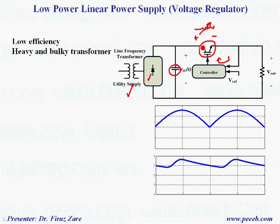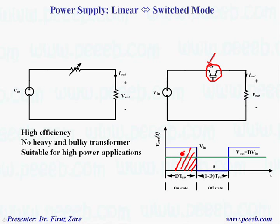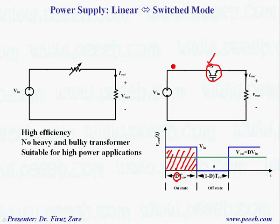So this sort of power supply is not a good one for high power applications because we have so much loss through this transistor. That's why we need to have another type of power supply. In switch mode power supply, we turn on and turn off the switch. So in this case, we chop the DC voltage based on the pulse pattern coming from a controller and then we try to change the DC voltage or change the average over one cycle. Basically, this is the method where we can control the duty cycle and then change the output voltage.